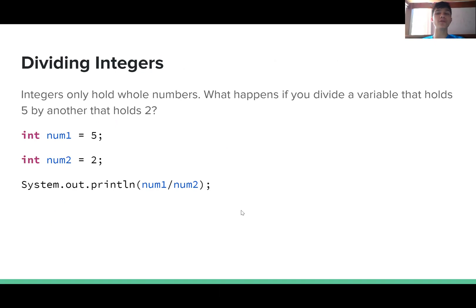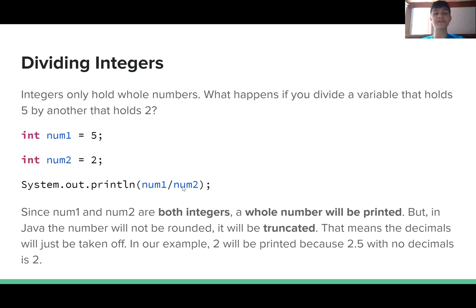Dividing integers. Integers only hold whole numbers. What happens if you divide a variable that holds 5 by another that holds 2? We have int num1 equals 5 and int num2 equals 2. So it's 5 divided by 2, and you'd expect the result to be 2.5, right? But since num1 and num2 are both integers, a whole number will be printed. But in Java, since the number will not be rounded, it will be truncated. That means the decimals will just be taken off. In our example, 2 will be printed because 2.5 with no decimals is 2.